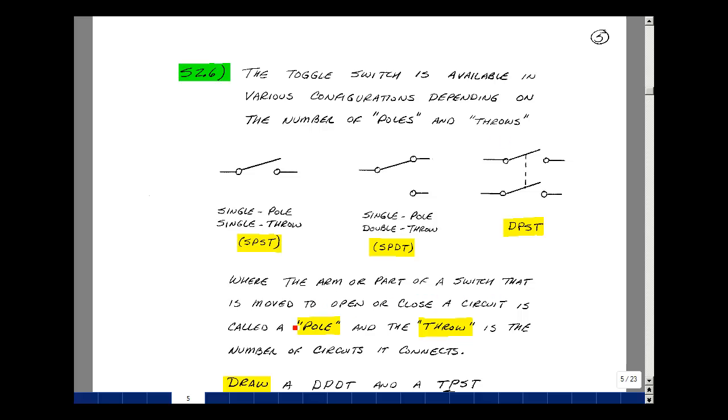The arm or the part of the switch that is moved to open and close a circuit is called a pull, and the throw is the number of circuits that are connected.